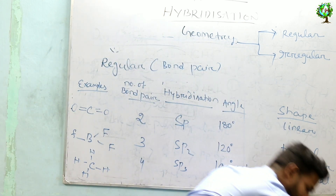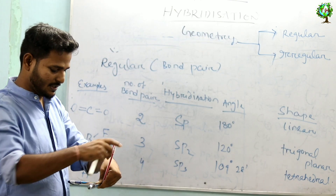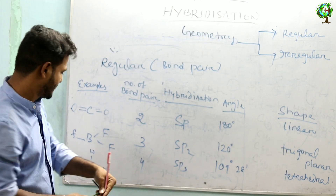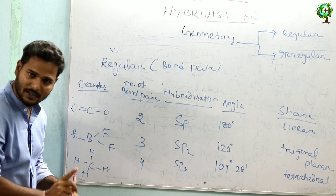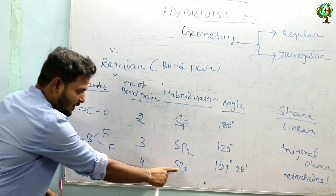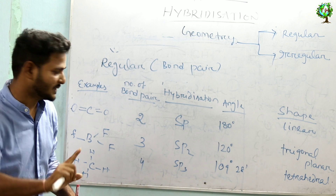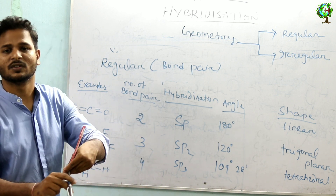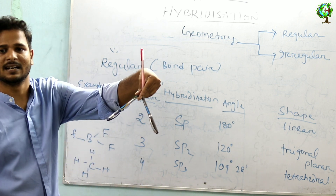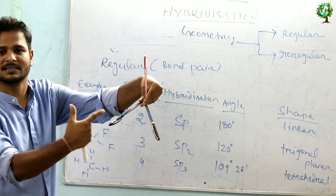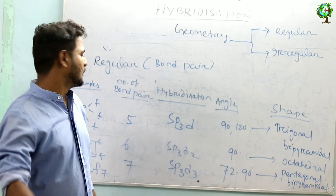Next, if I add another bond pair — this gives four bond pairs, as in the CH4 molecule. The hybridization is SP3. And the angle is 109.5 degrees. The shape is tetrahedral.